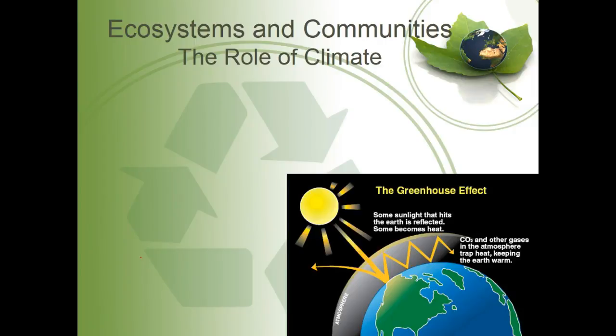Let's continue on with chapter four. In the last two lectures, we talked all about feeding relationships — food chains and food webs. We talked about different ecological pyramid models like the energy pyramid, the 10% rule, biomass pyramids, and number pyramids. All of those ecological pyramid models are used to show that each trophic level has to be bigger than the next trophic level in order to support a healthy food chain.